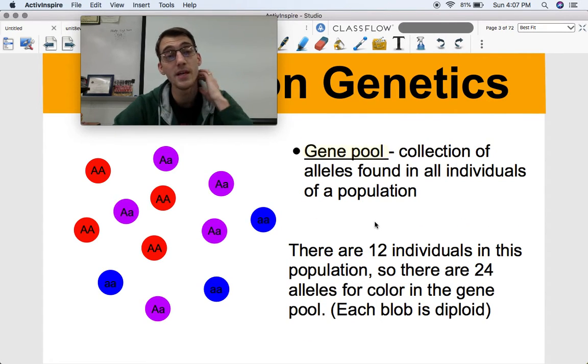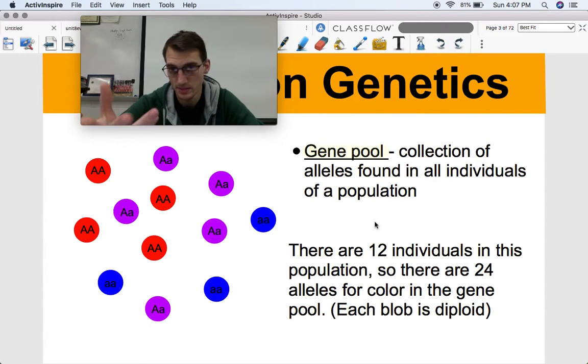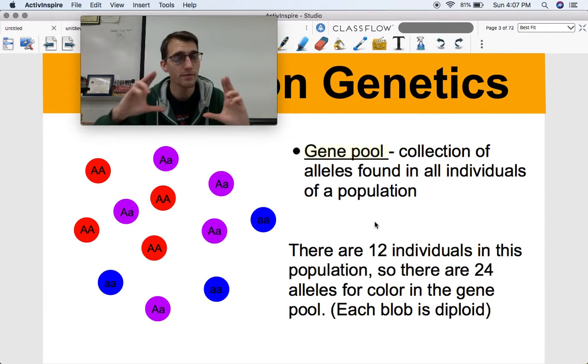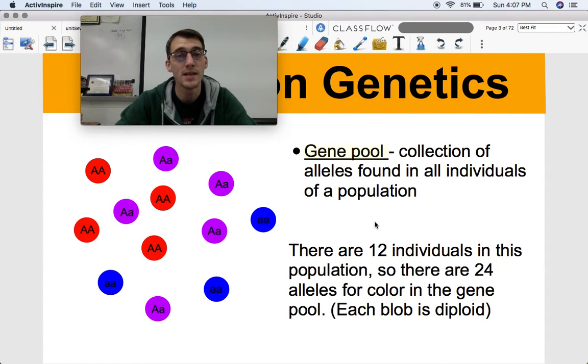So the genes in the alleles, the total collection of alleles that this population has is called the gene pool, which is a term that you may have heard of before. And that refers basically to the collection of alleles found in all individuals of the population. So if we're doing population genetics, that's what we are focused on is the entirety of a population's genes also known as the gene pool. And we're going to be talking about this one gene for color here or this one trait for color in this population for this example.